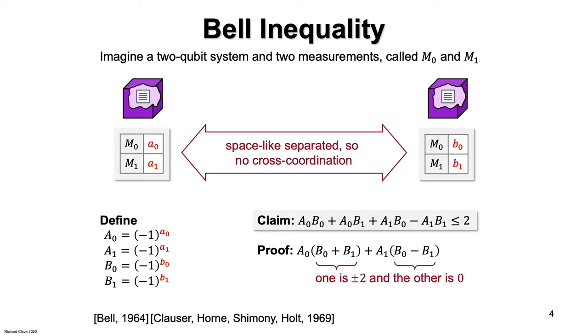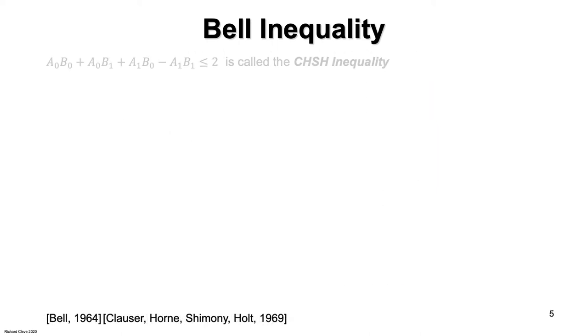That's how the CHSH inequality is proved. By the way, the original inequality along these lines is due to John Bell. All subsequent variations of it are called Bell inequalities.